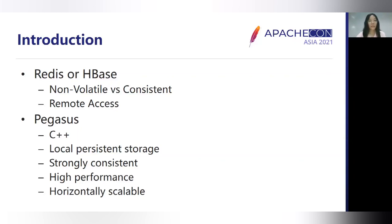As we all know, there are already lots of successful storage systems, such as Redis and HBase. However, no storage system suitable for all use cases exists. Redis has wonderful performance because of its in-memory feature, but it's hard for Redis to meet persistent storage and strong consistency at the same time. HBase supports strong consistency, but it accesses data from remote HDFS, leading to long-tail latency. So we developed PEXUS — written in C++, with local persistent storage, strong consistency, and high-performance distributed key-value storage.